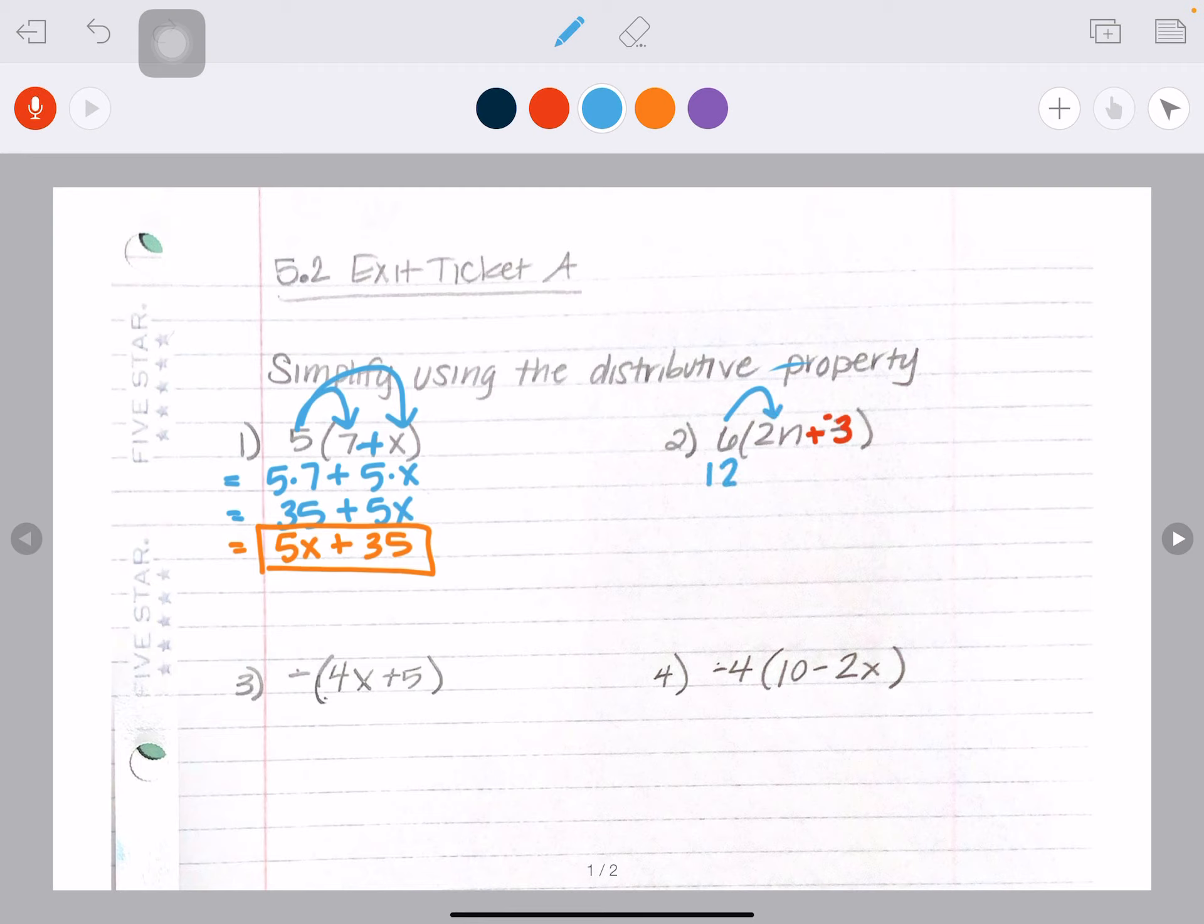And I like it to have those addition signs so that when I distribute, I still get that 12 N and I write my plus. But then I see, oh, it's a six times a negative three. That's a negative number.